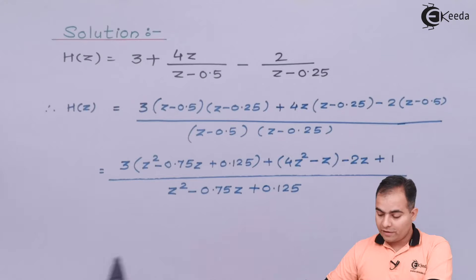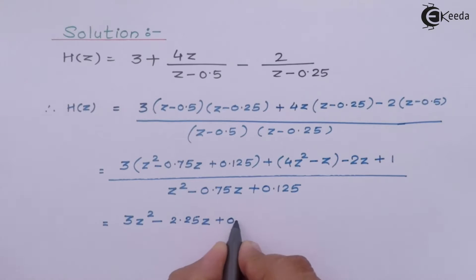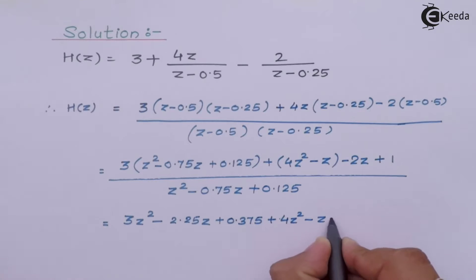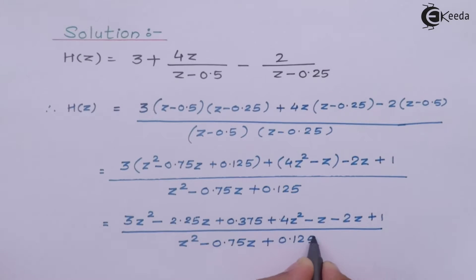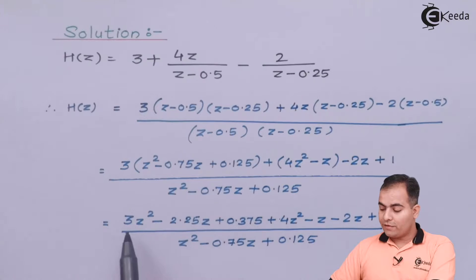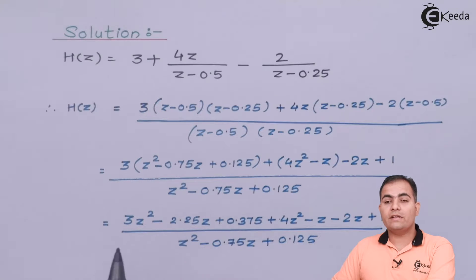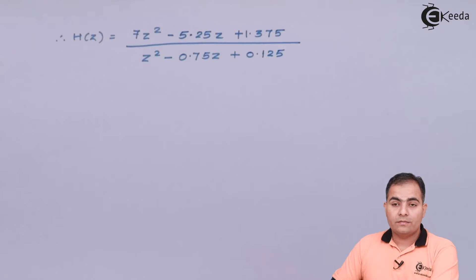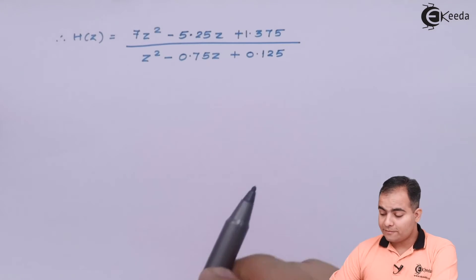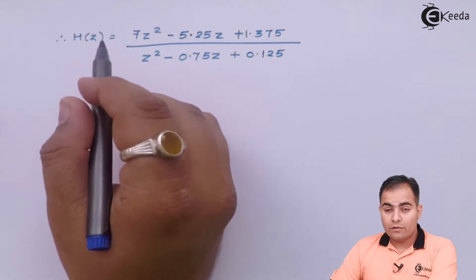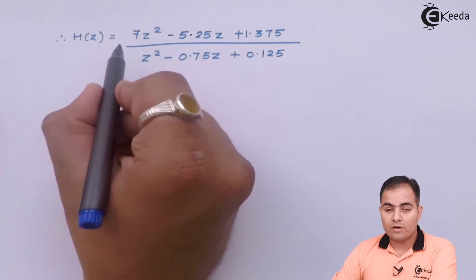Now solve the numerator part. After multiplying 3 inside the bracket we get that result. The next step is to add all the coefficients of Z squared, Z to the power 1, and Z to the power 0. By adding all the coefficients I get the combined equation. Now what we want is negative powers of Z, so just take Z squared common from numerator and denominator.